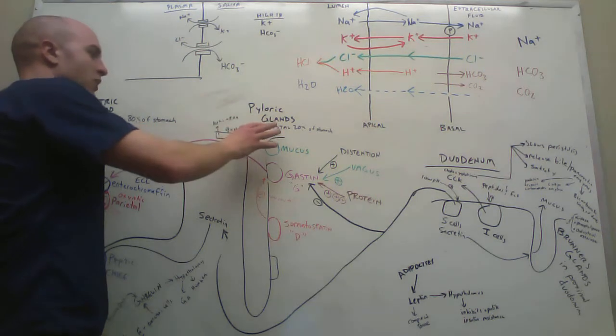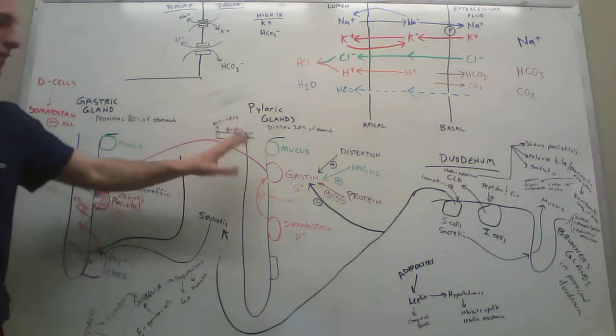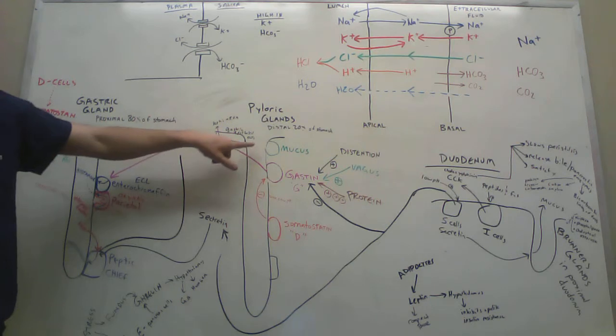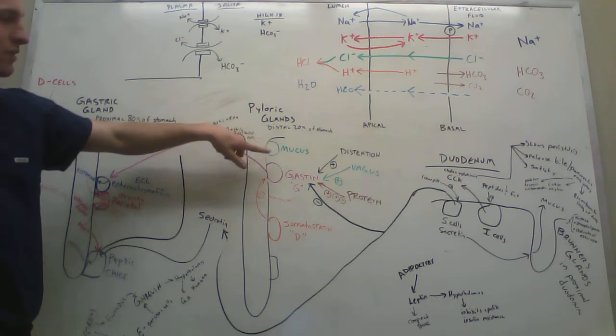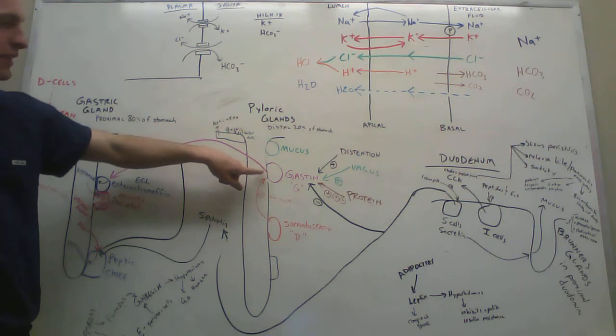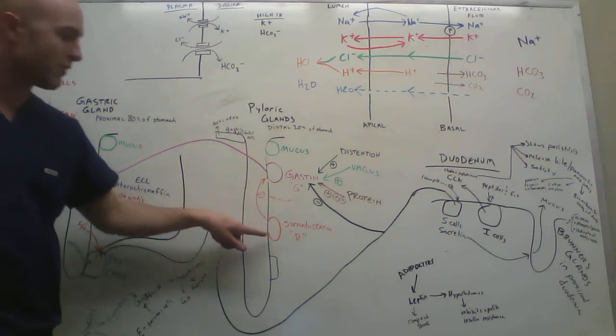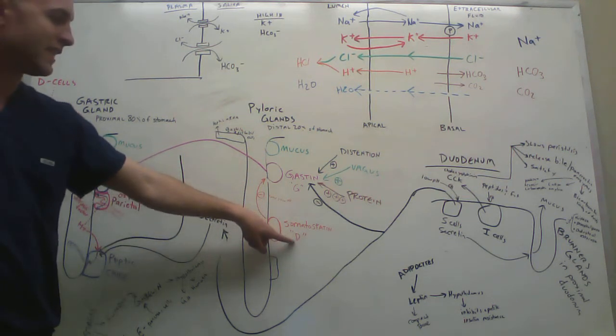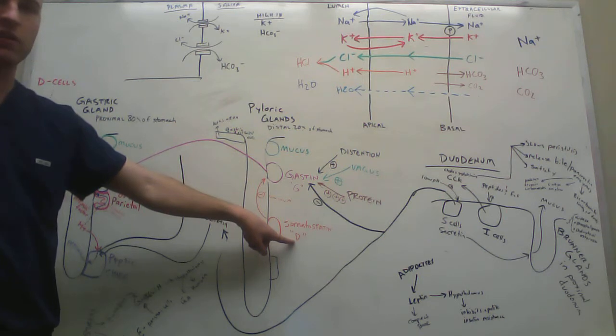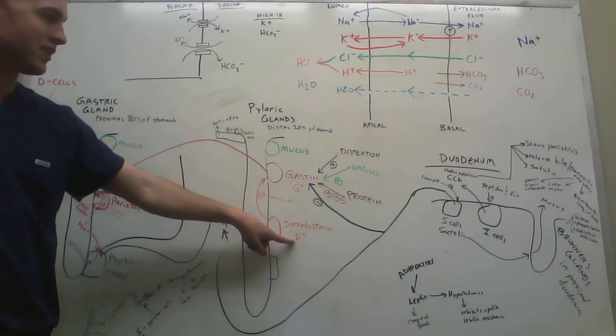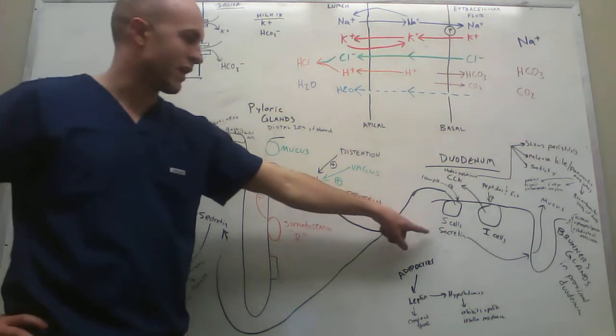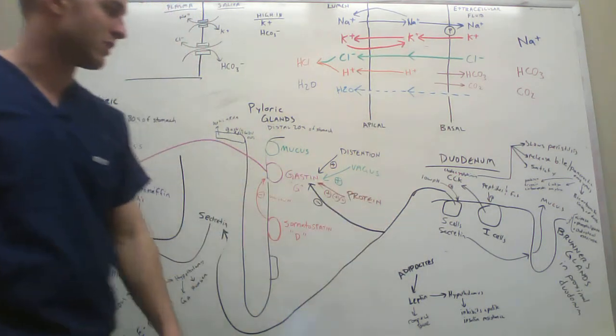Next is pyloric glands. In the distal 20% of your stomach, you have these pyloric glands. Towards the top, they have mucus secreting cells. Down inside they have gastrin cells, also known as G cells, and they also have somatostatin or D cells. Over here you have the S cells, which secrete secretin.